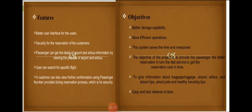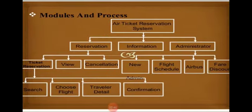Here are some objectives of air ticket reservation. Better storage capability. More efficient operation. This system saves time and manpower. The objective of the project is to provide passengers better reservation in terms of fast services to get the reservation done in time. To give information about luggage, airport, airbus, and airport tips about pets and healthy travelling tips. Easy and fast retrieval of data. Here is a module and process of air ticket reservation shown in a flow chart.